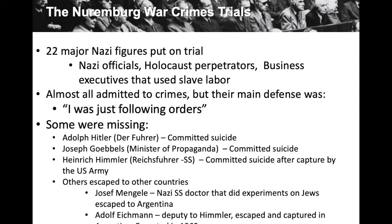Some people were missing at the Nuremberg war crimes trials for obvious reasons. Adolf Hitler committed suicide. Joseph Goebbels, minister of propaganda, also committed suicide — he and his wife Magda poisoned their children, and then Magda and Joseph killed themselves. Heinrich Himmler, Reichsführer-SS and the man in charge of the SS and concentration camps, committed suicide after being captured by the U.S. Army.